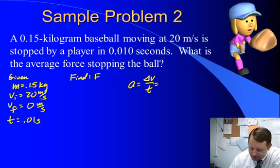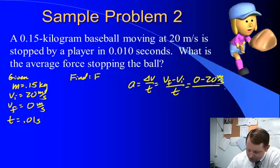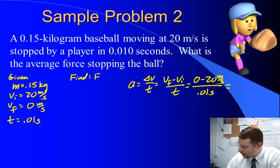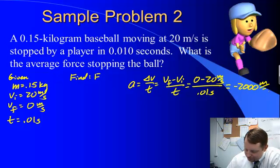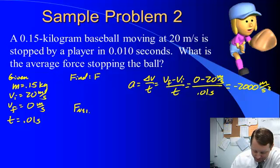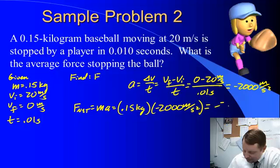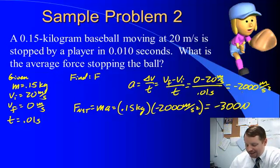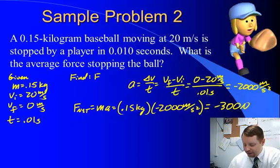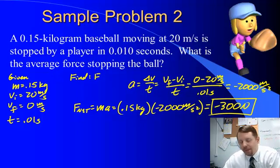Acceleration equals change in velocity over time, or final velocity minus initial velocity over time: (0 − 20) / 0.01 = −2,000 meters per second squared. Now we can find the net force: F net = mass × acceleration = 0.15 kg × (−2,000 m/s²) = −300 newtons. The negative sign means the force is opposite the initial direction of motion, which makes sense since we're bringing the ball to rest. So the magnitude of the stopping force is 300 newtons.